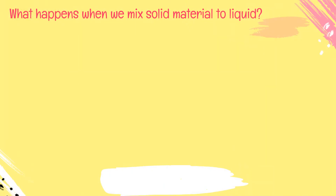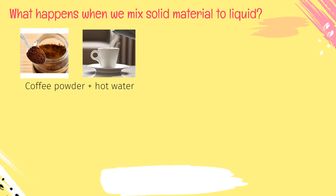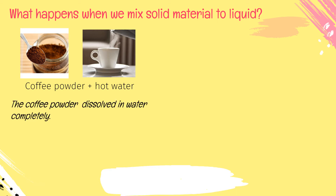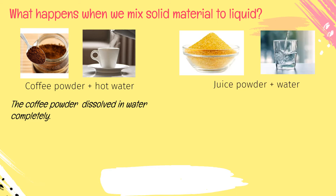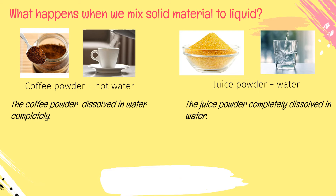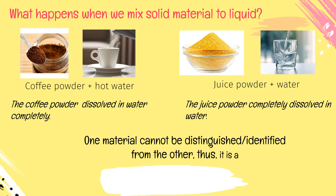What happens when we mix solid material with liquid? Just like when we mix coffee powder and hot water — the coffee powder dissolves in water completely. How about mixing juice powder and water? The juice powder completely dissolves in water. One material cannot be distinguished or identified from the other, thus it is a homogeneous mixture.